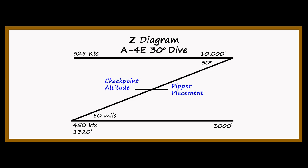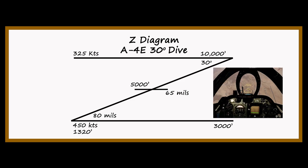Essentially, once you have rolled in and are set up, as you pass through the checkpoint altitude you place a line on the sight over the target — this number is given by the PIPR placement. In the 30-degree dive, the checkpoint altitude is 5,000 feet and the PIPR placement is 65 mils. As you go through 5,000 feet, you want the 65-mil line over the target, which means the flight path vector at the top of the sight will be on the appropriate aim-off mark.